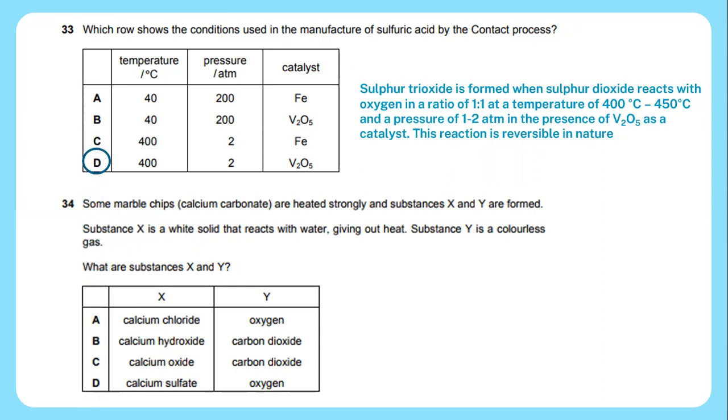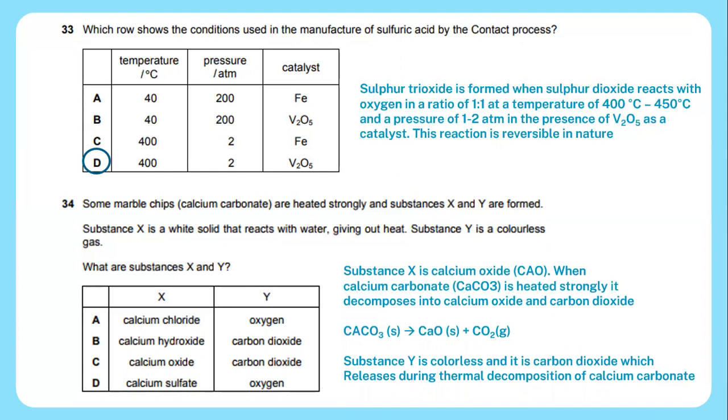Question 34: Some marble chips, calcium carbonate, are heated strongly and substances X and Y are formed. Substance X is a white solid that reacts with water giving out heat. Substance Y is a colorless gas. What are substances X and Y? Substance X is calcium oxide CaO. When calcium carbonate CaCO3 is heated strongly, it decomposes into calcium oxide and carbon dioxide. The chemical reaction is CaCO3 in solid form produces CaO, calcium oxide in solid form, plus carbon dioxide in gas form. Meanwhile substance Y is carbon dioxide which releases during thermal decomposition of calcium carbonate. The answer is C.